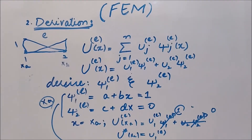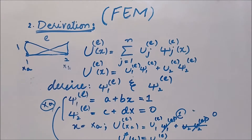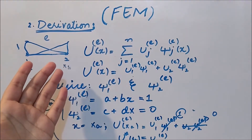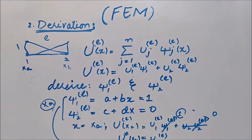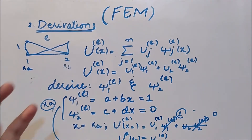Hello everyone, this is from eAcademy. In the previous video we talked about how to derive a shape function in the finite element method using a linear element with two nodes per element. Before going to the third step, we will discuss higher-degree elements and also talk about global and local node numbering and how to relate them to local and global coordinate systems.